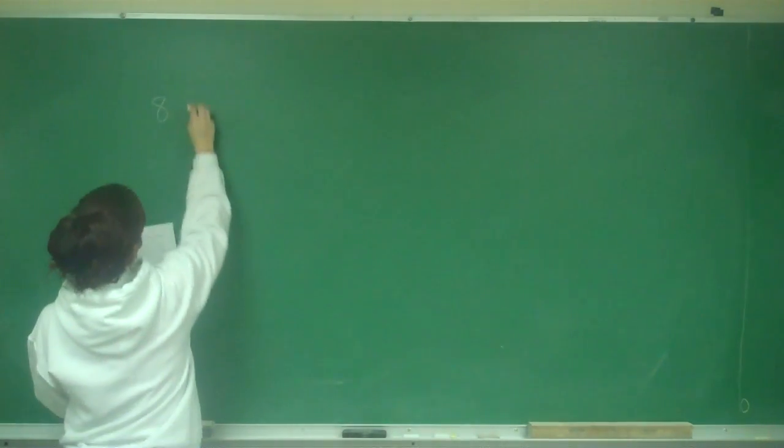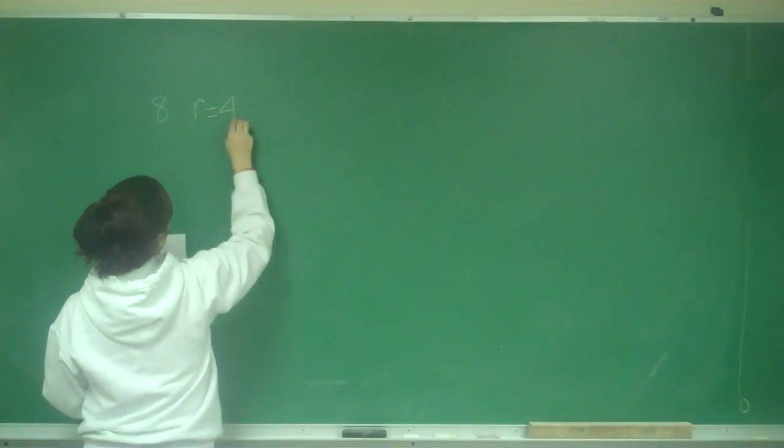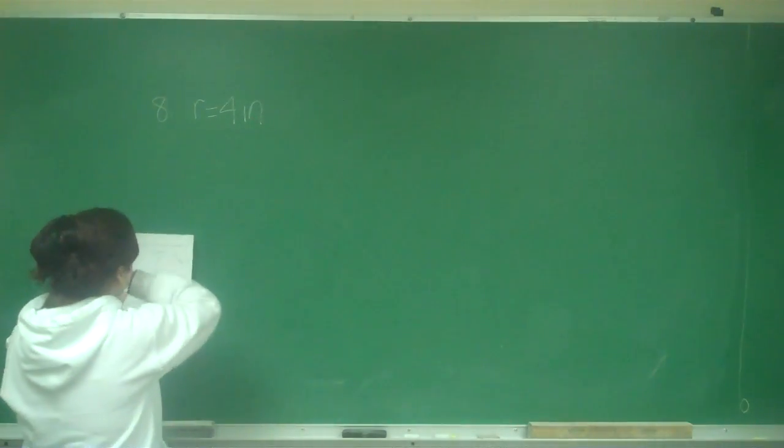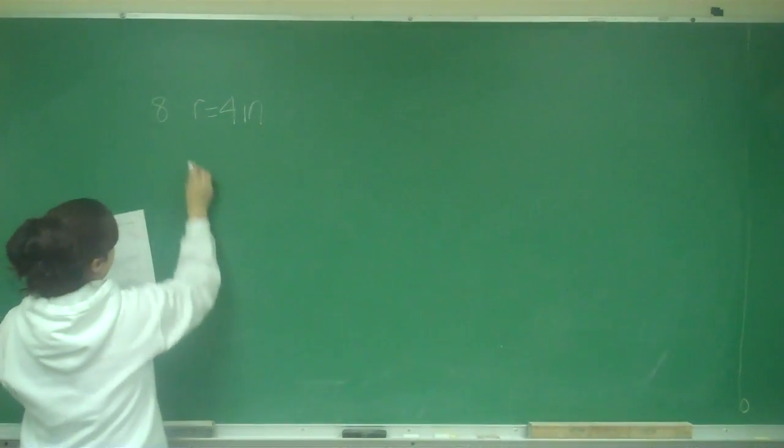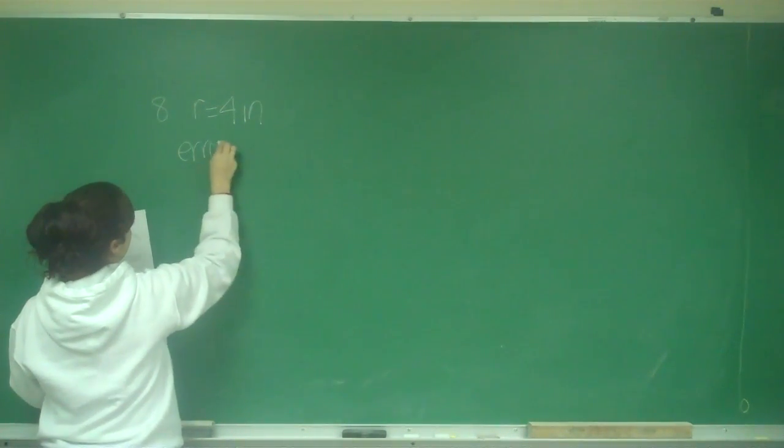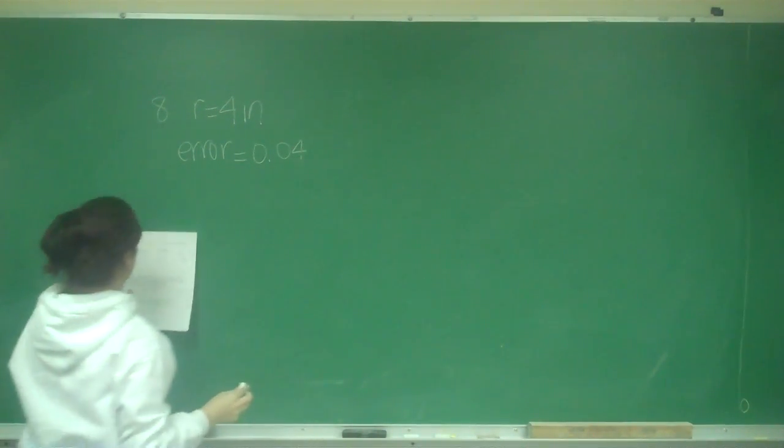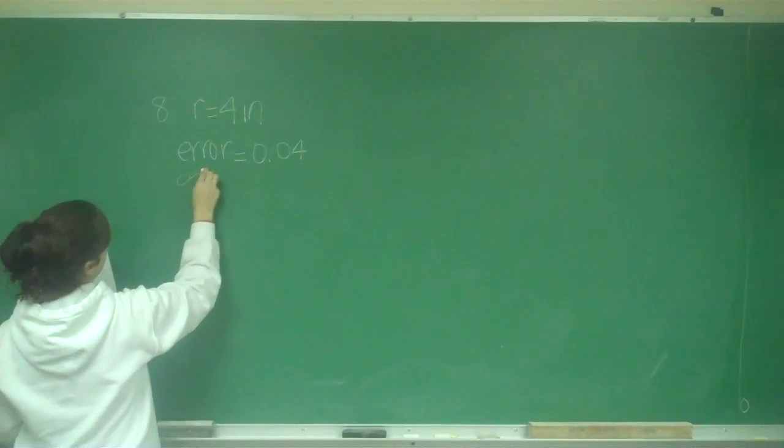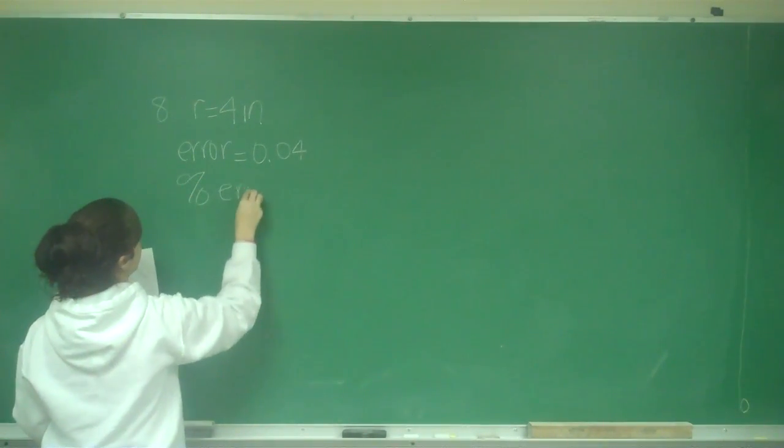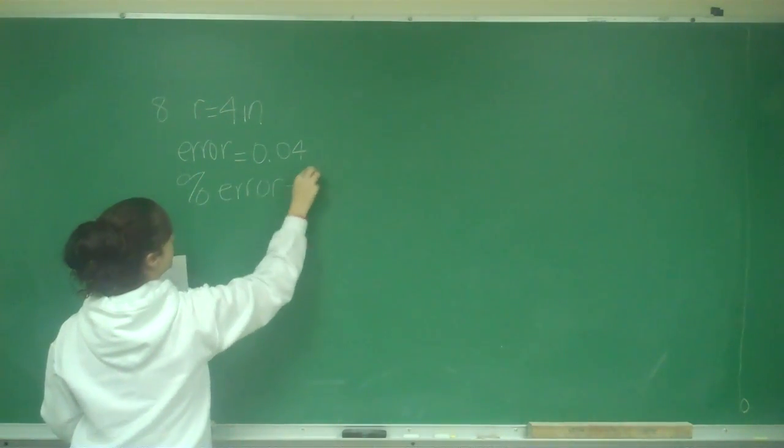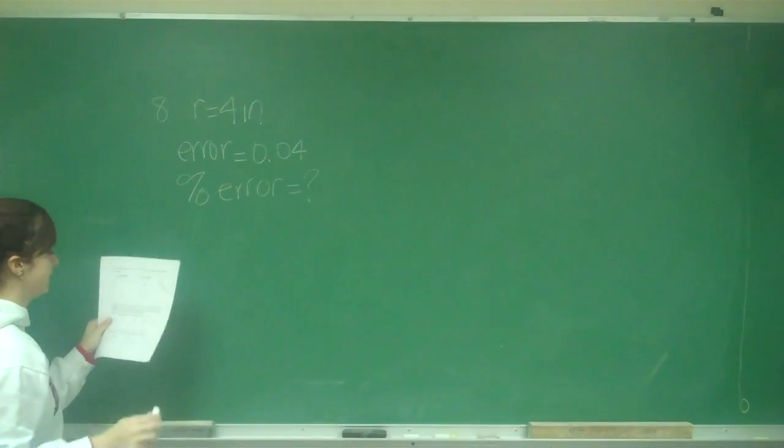Problem number 8: they tell us that the radius of a sphere is 4 inches, and the measurement of R has a possible error of 0.04. Use differentials to determine the percent error of the surface area.